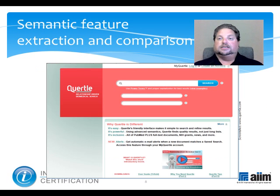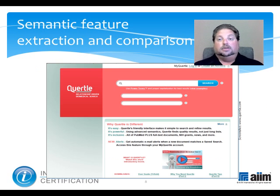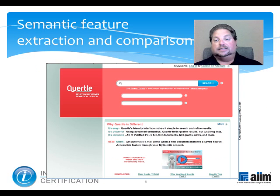Semantic feature extraction and comparison is based on the notion that objects consist of certain features that we use semantics to describe. For example, a robin has wings, feathers, a beak, and a red breast.